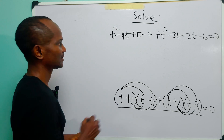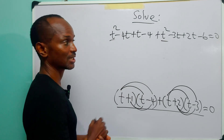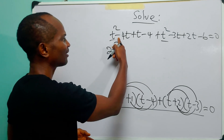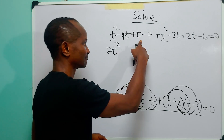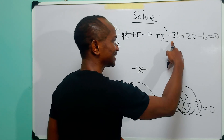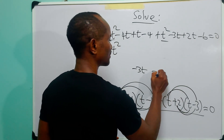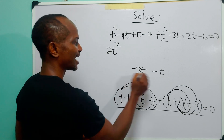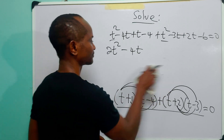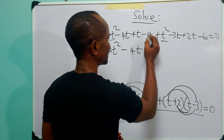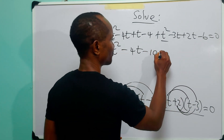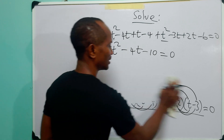Now we collect like terms. We have t² and t², both positive, giving 2t². For the t terms: -4t + t = -3t and -3t + 2t = -t, adding both gives -4t. For the constants: -4 + (-6) = -10. So the equation is 2t² - 4t - 10 = 0.